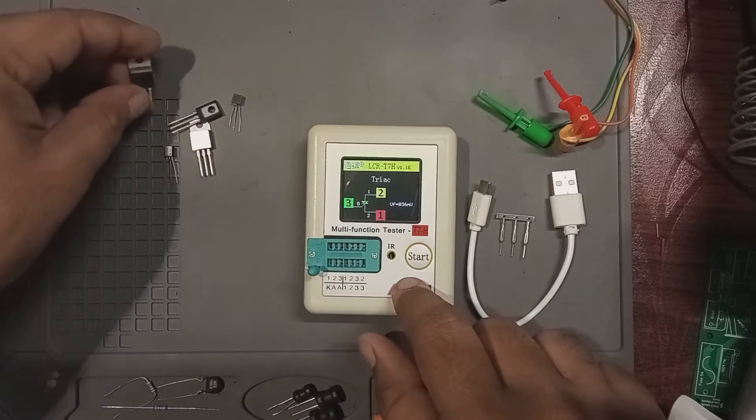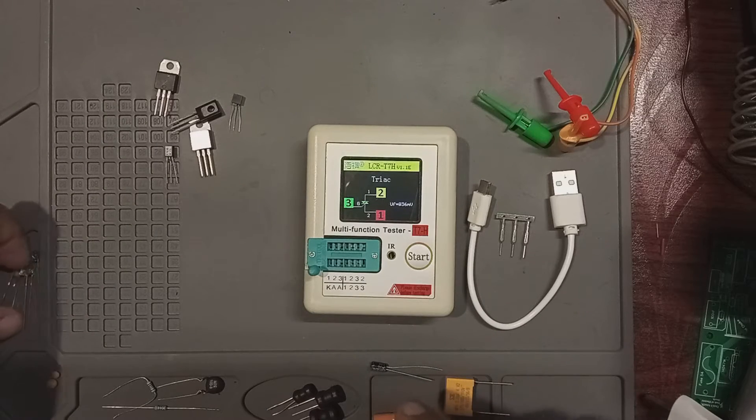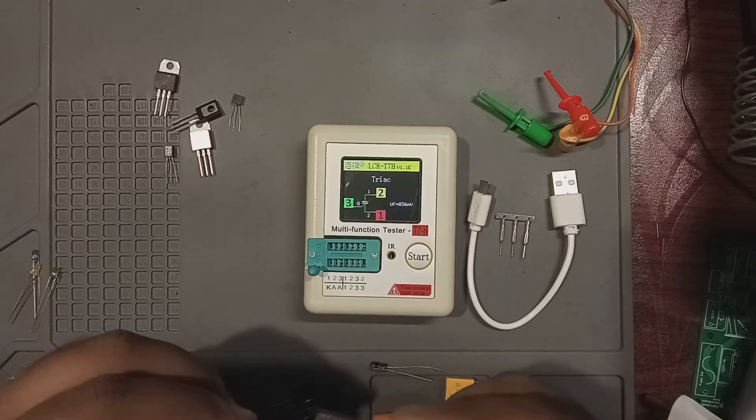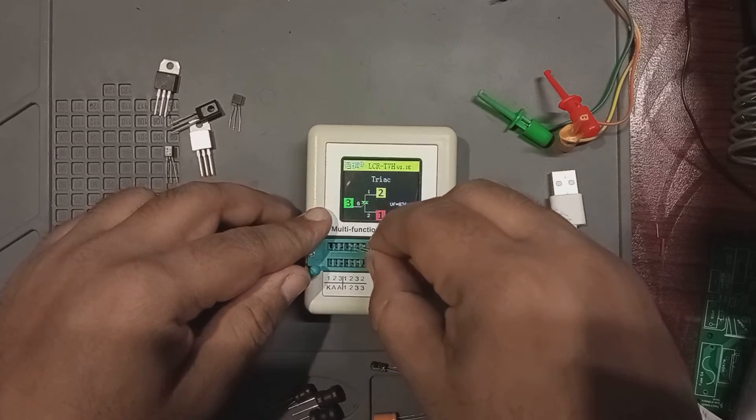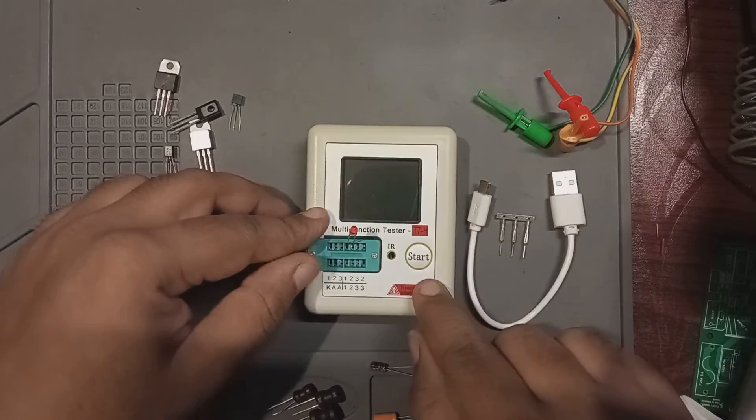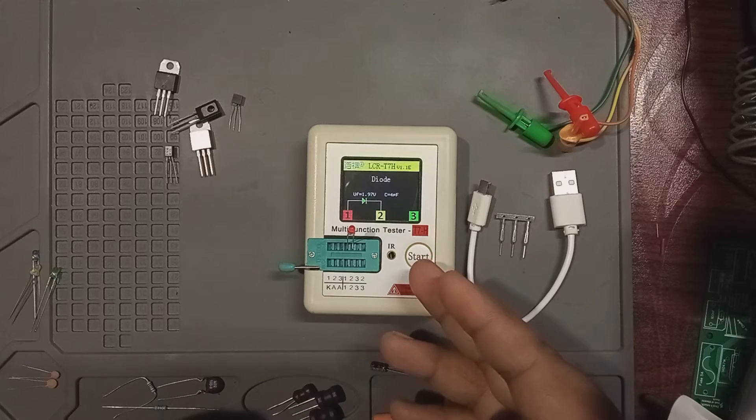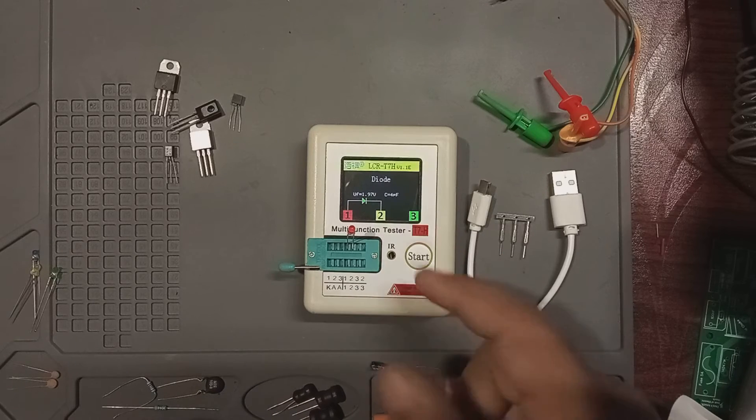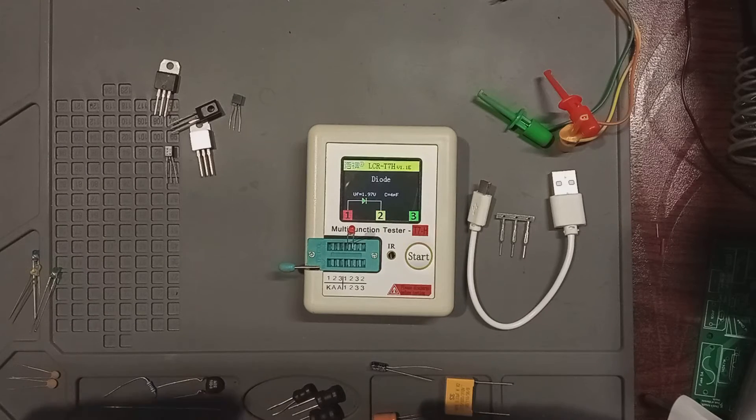The VF notation is a bit ambiguous here. I'm not entirely certain about its exact meaning. Now let's measure the forward voltage of some LEDs. Let's start with this red LED. The LED can be inserted in this ZIF connector. And if you now press the start button, the LED blinks and the meter measures the capacitance of 4 picofarads and forward voltage drop of 1.97 volts, which is true for red LEDs.